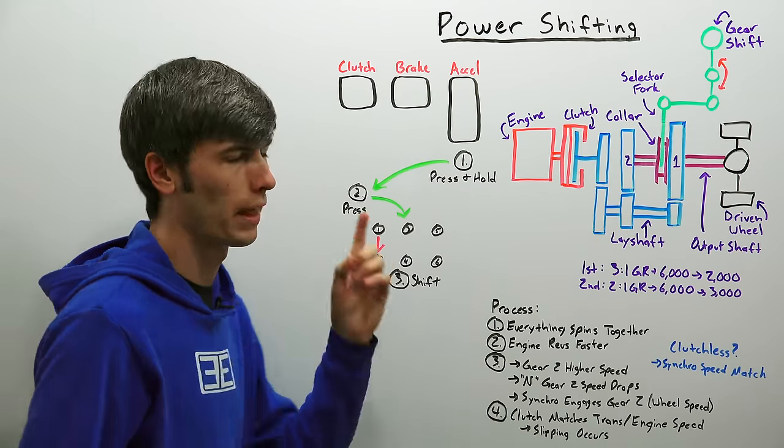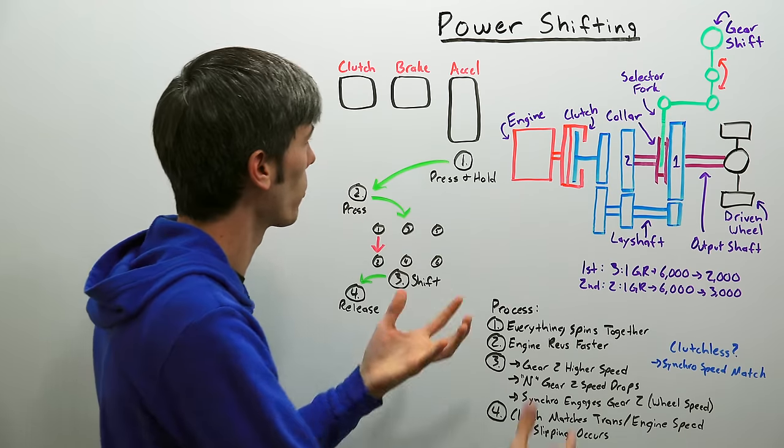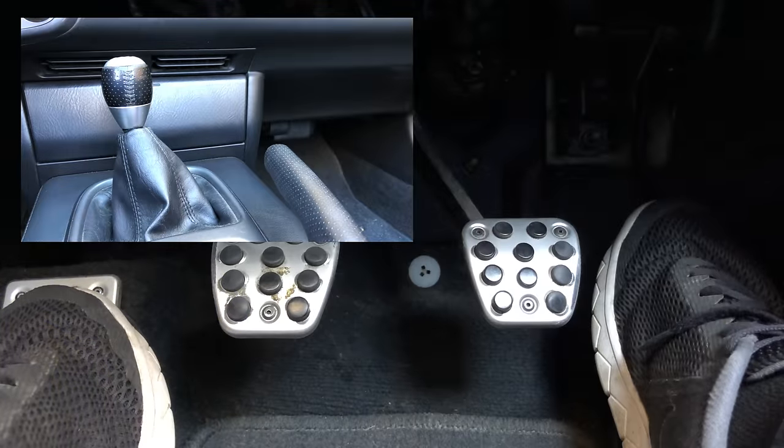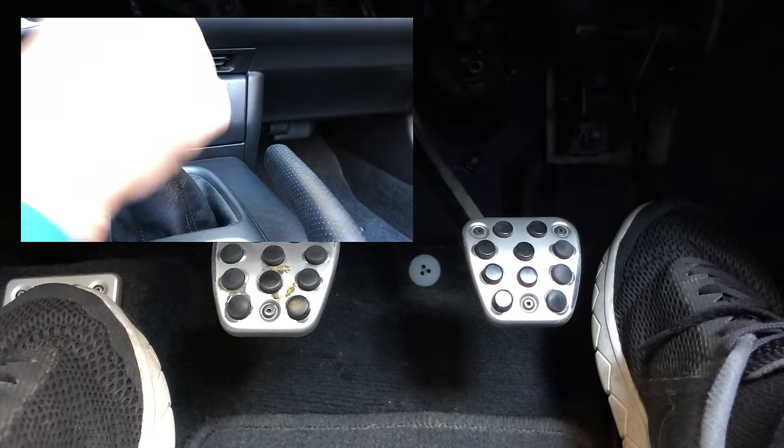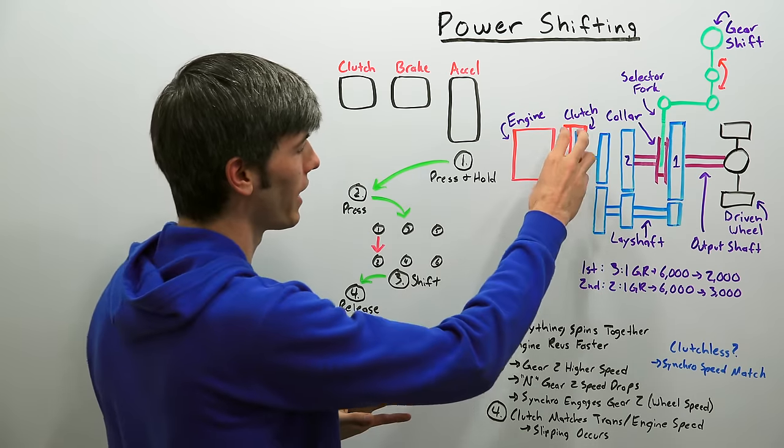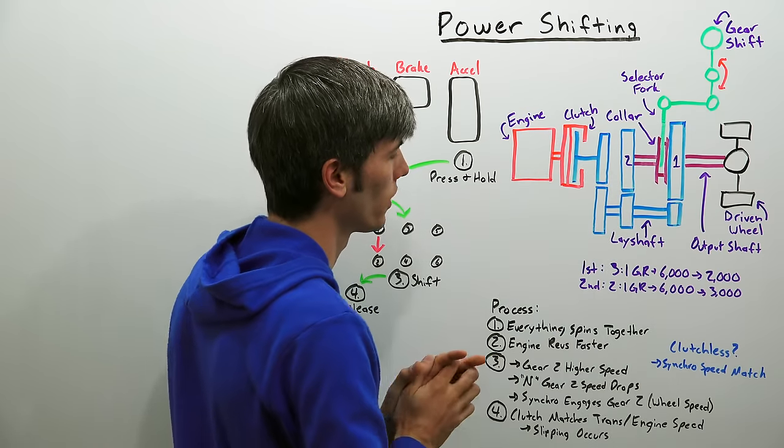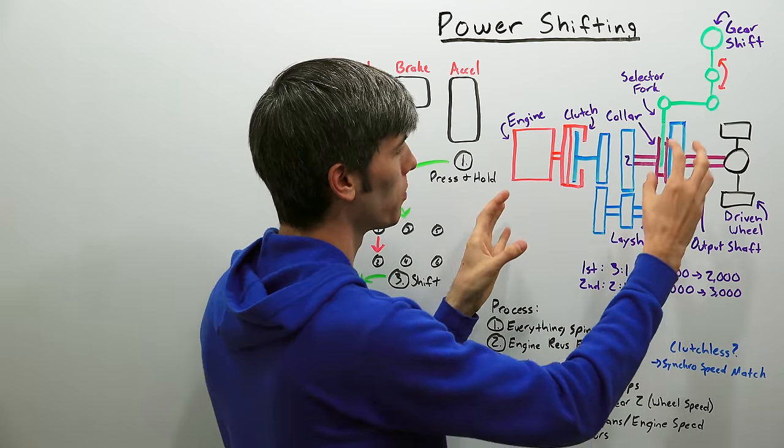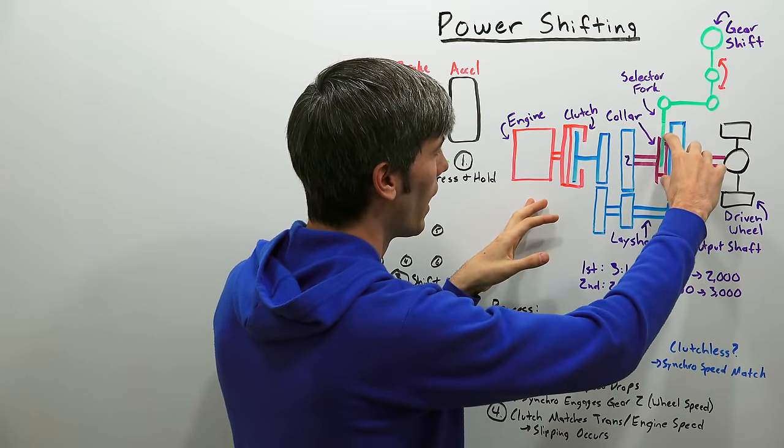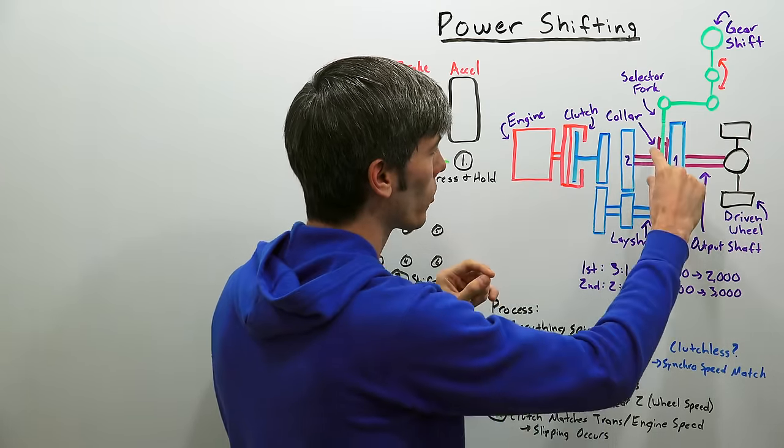Now some people will say that true power shifting is shifting leaving your foot down and not using the clutch at all. And in this case yes this is terrible for your synchronizers because what you're doing is you're eliminating the clutch's job and you're giving that job to the synchronizer. And so the only thing that's matching the wheel speed to the engine speed is your synchronizer.